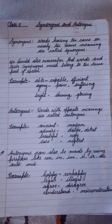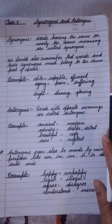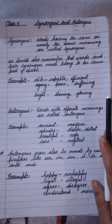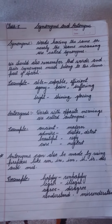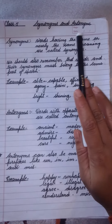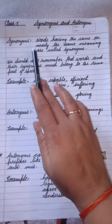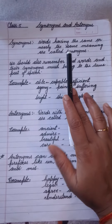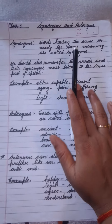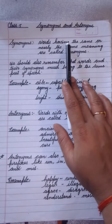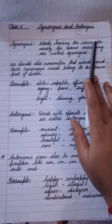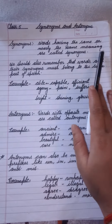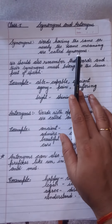In this video, I am going to tell about the synonyms and antonyms. First, we should know the definition of synonyms. Words having the same or nearly the same meanings are called synonyms.